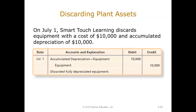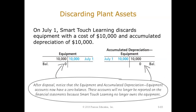In this case, Smart Touch is going to get rid of an asset. It cost $10,000 and there's accumulated depreciation of $10,000 on this asset. So when we discard it, we'll debit accumulated depreciation for $10,000 and credit equipment for $10,000. That asset is no longer on the books — it's gone.